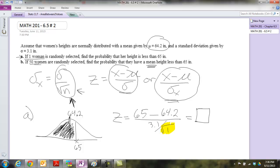If we're going to do part B, the only difference is, now, the z is going to be 65 minus 64.2, all over 3.1, and this time, what's our n? That's right, 50. Again, you'll get a z-score. You'll look that up in the table, and that will give you, each one of those will give you a probability.